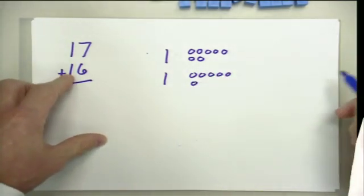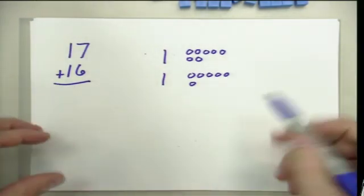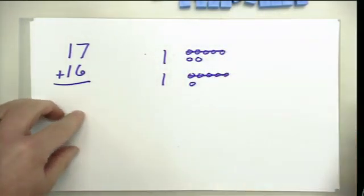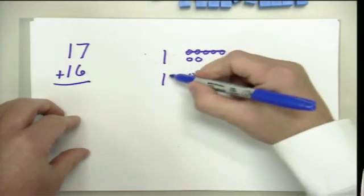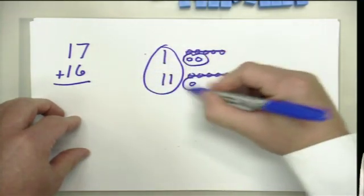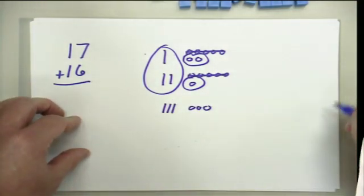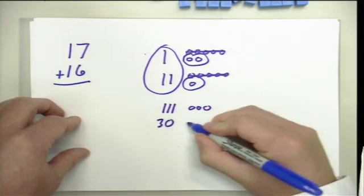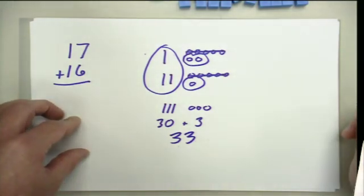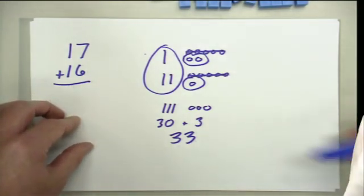Recall that addition means putting together, and we wanted to check for a group of 10 to see if 10 ones could be traded in for 1 ten. We can see we have two sets of five, so I can cross those out and give myself another 10. Coming down below, I've got 3 tens and 3 ones — values of 30 and 3 — meaning my sum for 17 plus 16 is 33. This time we've made sense out of the problem using a representation very much connected to our concrete work.